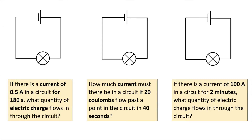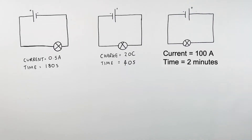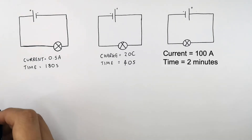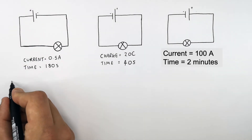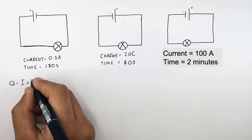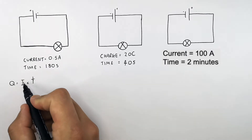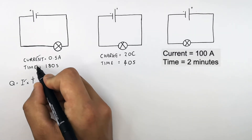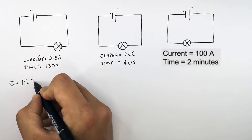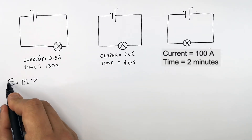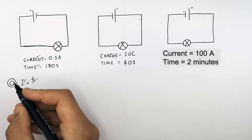You are asked to calculate the quantity of charge flowing through the circuit. Because you have current and time, you recall the equation Q equals I times T — charge equals current times time. You've got I (current) and T (time), and we're trying to calculate Q (charge), so you leave the formula as it is.